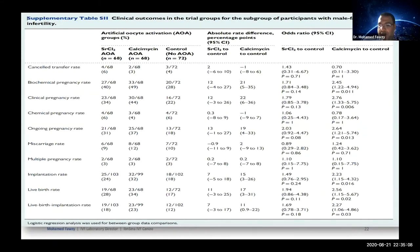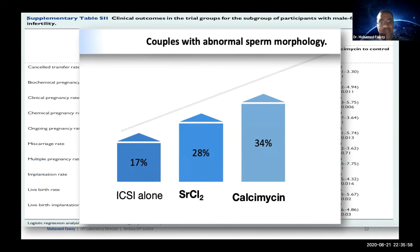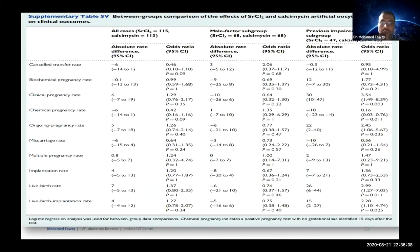Among couples with male factor infertility and abnormal sperm morphology, calcimycin activation significantly improved the rate of live birth and live birth implantation, whereas strontium chloride activation and ICSI alone were comparable. It is likely that when the problem stems from male factor infertility, the calcium oscillation machinery is functional in the oocyte but receives insufficient stimulation from ICSI alone. Calcimycin provides additional calcium entry from the surrounding medium, boosting the initiation of calcium oscillation. Strontium chloride has less effect because the defect is not with the oscillation machinery itself but with its initiation.